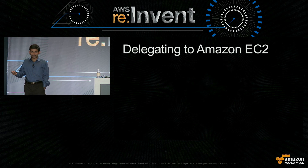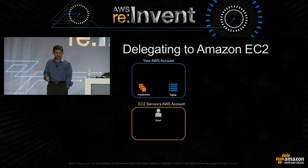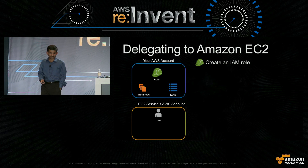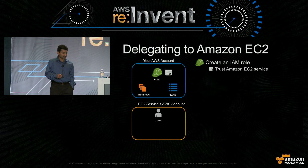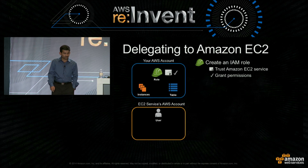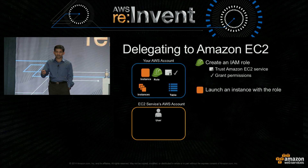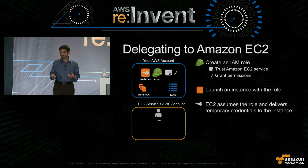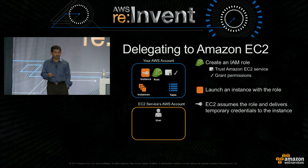That's where delegating access to Amazon EC2 becomes special and interesting. You start the same way: create a role in your account, but this time you trust the Amazon EC2 service, then grant permissions — these are the permissions that your application is going to need. Then when you launch an instance, you just say 'I want to launch the instance with this role.' EC2 automatically assumes the role in your AWS account and makes those credentials available to the instance. And if you use the AWS CLI or AWS SDK, these automatically use those credentials, so you don't have to change your application at all.